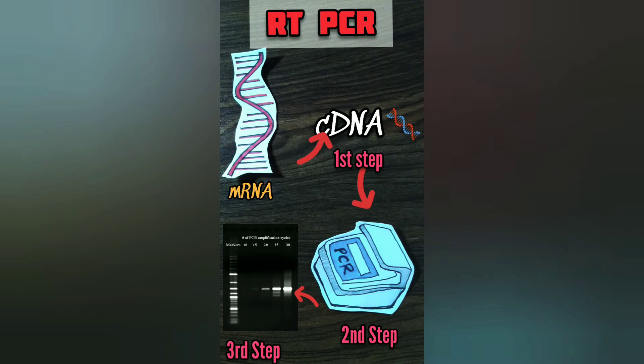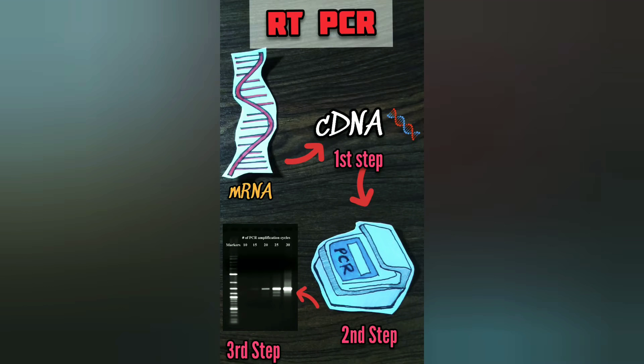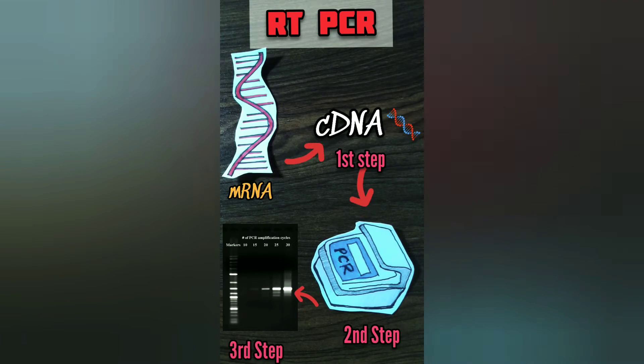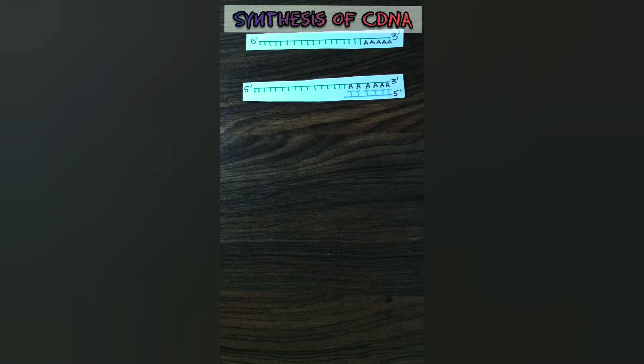In the final step, these PCR products are analyzed using gel electrophoresis. Now let us learn about the synthesis of complementary DNA in more detail, starting with the first step.